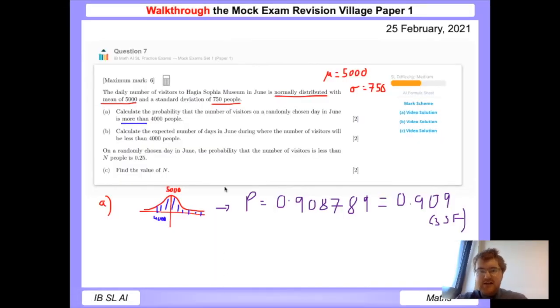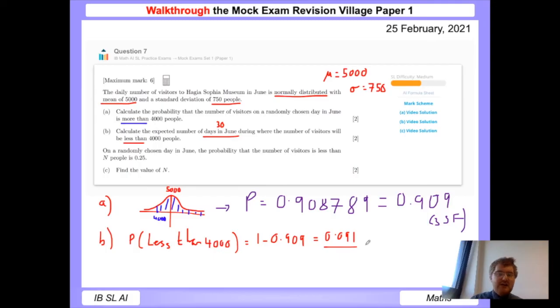For question b, we want to find the expected number of days in June. How many days are in June? Well, 30 days have September, April, June, and November, so it's 30. During where the number of visitors will be less than 4,000 people. What we've worked out in part a is more than 4,000, so to work out the probability of less than, we know the probabilities always add up to one. So we do one minus 0.909, and we get 0.091.